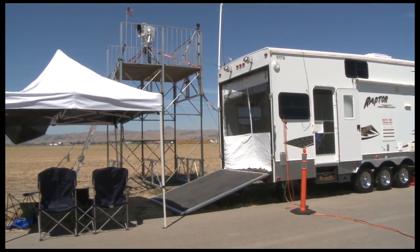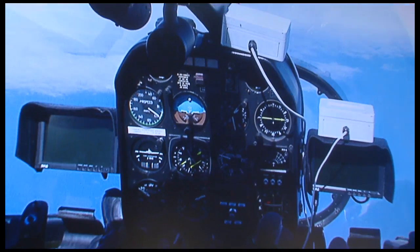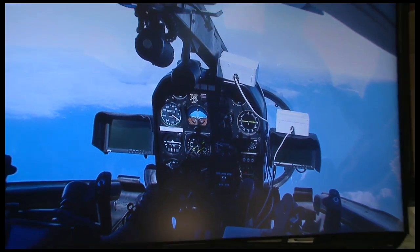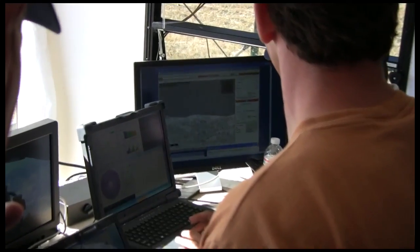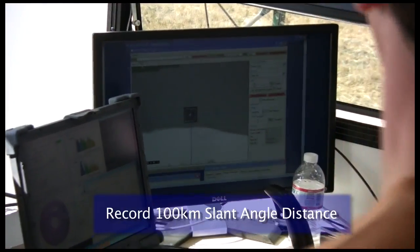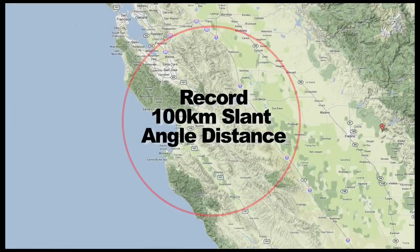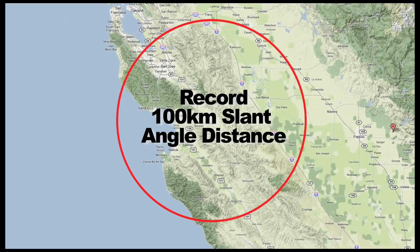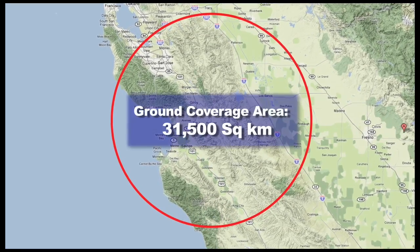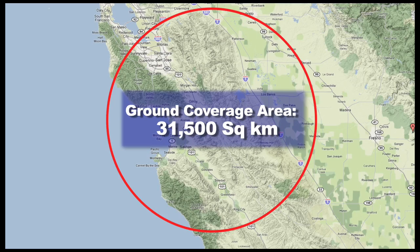From the ground control trailer, the team anticipates flying further and higher than in previous tests. A-optics was able to set a new record for the Eagles program with a slant angle distance of over 100 kilometers. The distance translates to an effective ground coverage area of over 31,500 square kilometers.